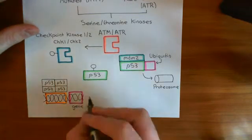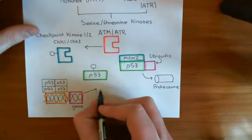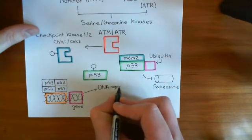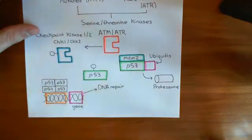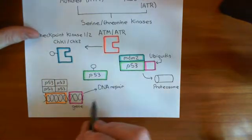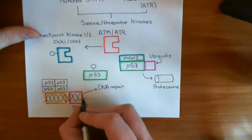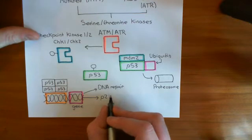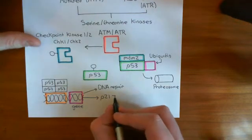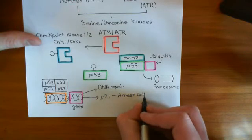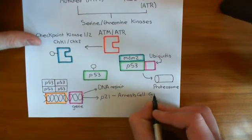Which genes does P53 increase the transcription of? Firstly, you increase the transcription of genes which make proteins involved in DNA repair. That seems logical — you've had DNA damage, which is the whole reason P53 got activated. So you need to make proteins to repair that DNA damage. You also make the tumour suppressor protein P21, which as we've seen previously in the TGF-beta pathway arrests the cell cycle and stops the cell dividing.